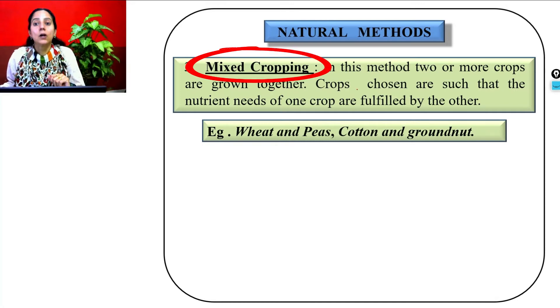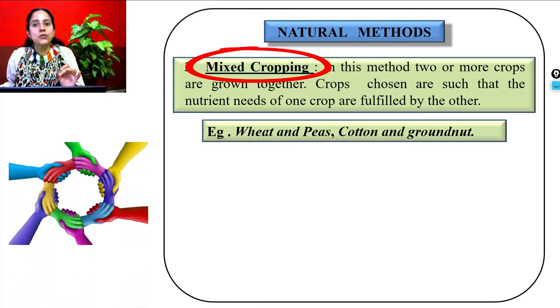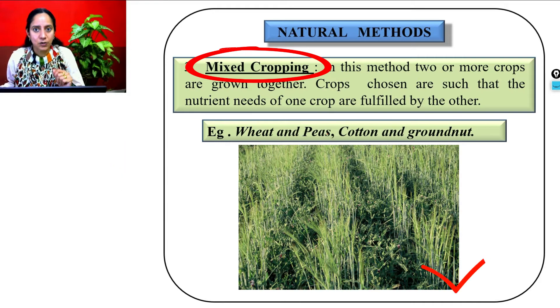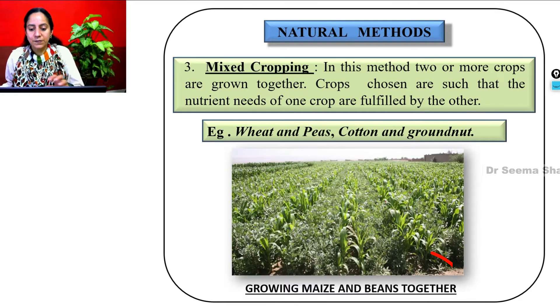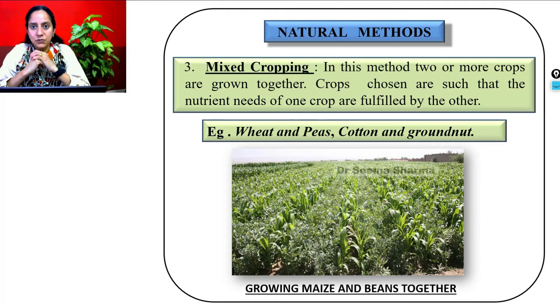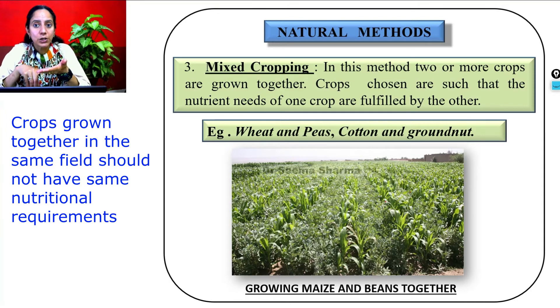The third natural method is mixed cropping. In mixed cropping, two or more crops are grown together. Crops are chosen such that the nutritional needs of one crop are fulfilled by another. Examples include wheat and peas grown together, cotton and groundnut in the same field and season, and maize and beans growing together. Farmers must keep in mind that if the crops planted have the same nutritional requirements, they will compete with each other and crop yield will drastically go down. Although these natural methods are slow, they help restore soil fertility without creating any imbalance.